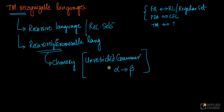The Turing machine is the most powerful automaton amongst all these automata, which can recognize two types of languages. Grammars generate languages; machines accept or recognize languages.